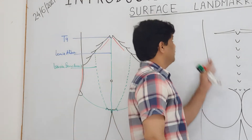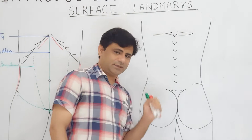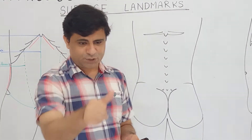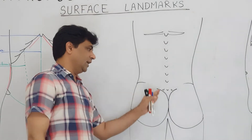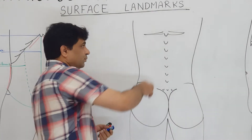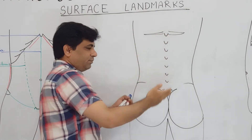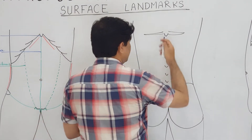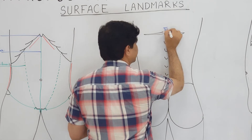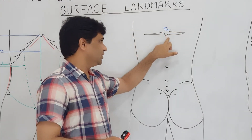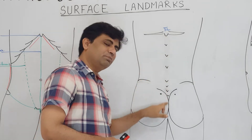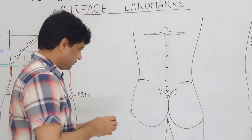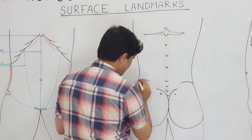Now we will talk about the surface landmarks on the back. In the back, the midline is marked by the spinous processes of the thoracic, lumbar, and sacral spines. The posterior margin features the twelfth rib, so you can confirm that this one is T12. On the back, when you see T12, you can palpate down its spine and then reach the iliac crest posteriorly, which you can palpate easily on the back.